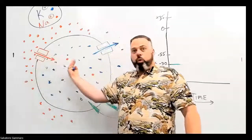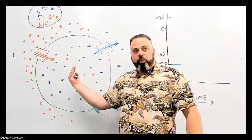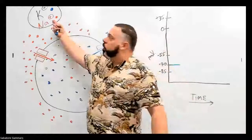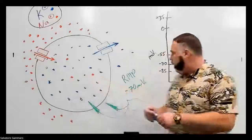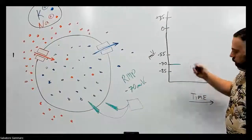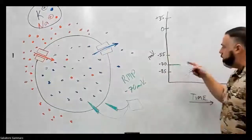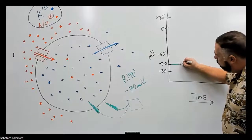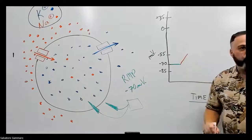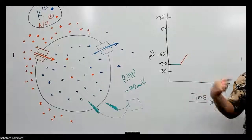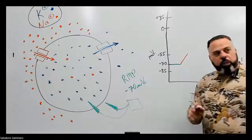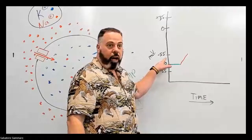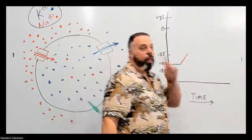So sodium is going to come in. Does that make inside the cell more positive or more negative? More positive. So what will happen on the graph is that when this gets stimulated, it's going to start going up. If the stimulus is so great that it goes beyond negative 55 — now we've got the sneeze.